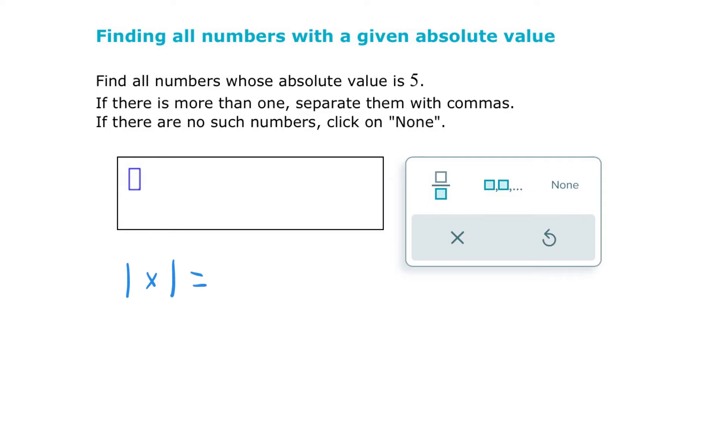So this first problem says find all the numbers whose absolute value is 5. So I want to know all the values of x that are 5 units from 0. Well, that would be x could be positive 5 or it could be negative 5. Both positive 5 and negative 5 are 5 units from 0. And remember, that's what these absolute value bars mean, how far from 0.